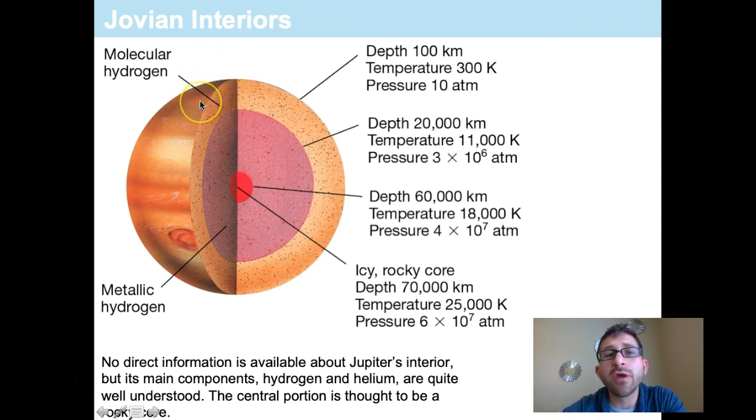On the outer layers, we now have molecular hydrogen. Temperatures are low enough where that's possible. So, once again, no direct information is available for interior of Jupiter, but its main components we do know are mostly hydrogen and helium, very similar to that of a star, very similar to the composition of the universe as a whole, and is a very good indicator as to the composition of our solar nebula, the thing that formed the planets and the Sun in the early solar system.